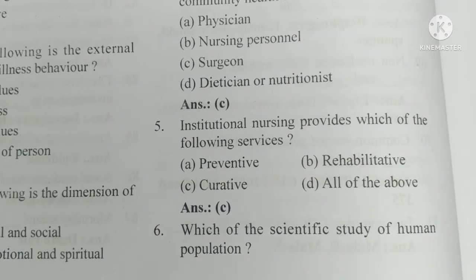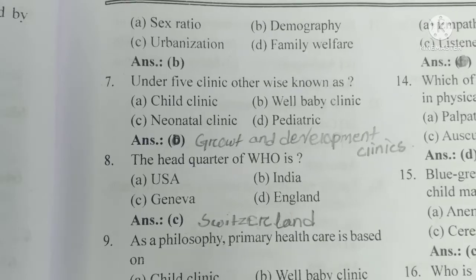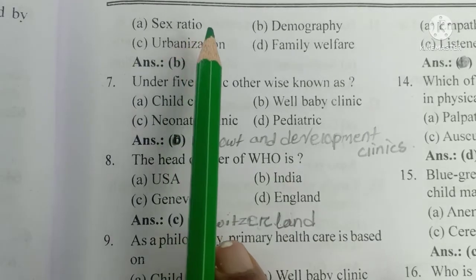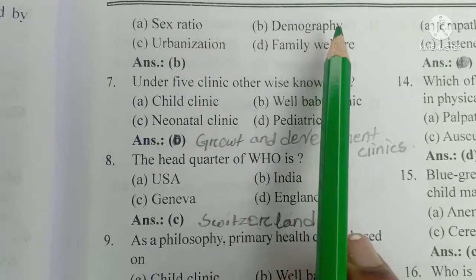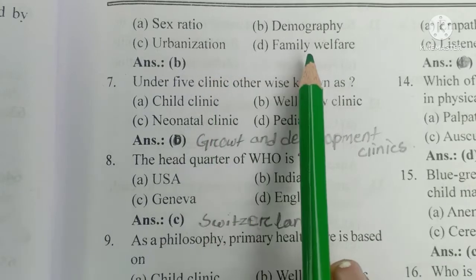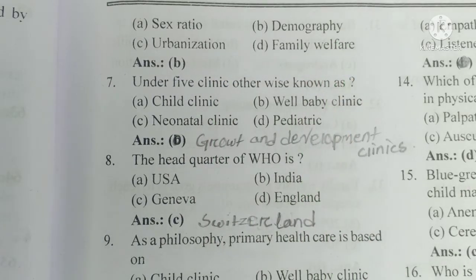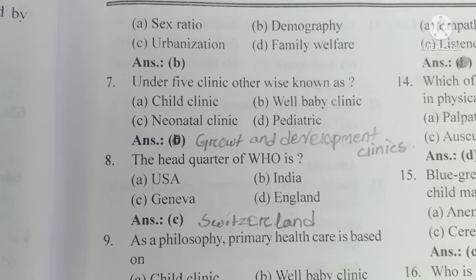Number 6. Which is the scientific study of human population? A) Sex ratio, B) demography, C) urbanization, D) family welfare. The answer is B, demography. The scientific study of human population is demography.